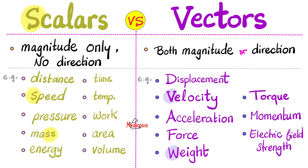Next, scalars versus vectors. A scalar is a physical quantity that has a magnitude only but no direction. A vector, on the other hand, has both a magnitude and a direction. Distance is a scalar, but displacement is a vector. Speed is a scalar, but velocity is a vector. So again, distance has a magnitude only but no direction, so there is no such thing as a negative distance. But displacement has a magnitude and a direction — it could be a positive direction or a negative direction.